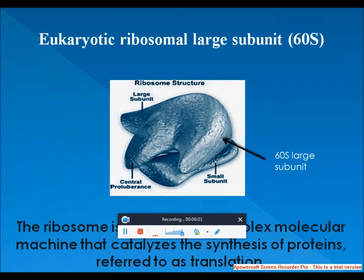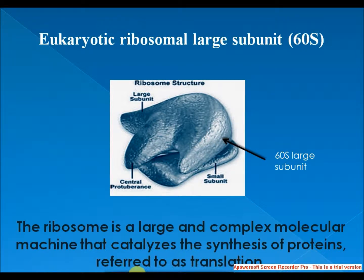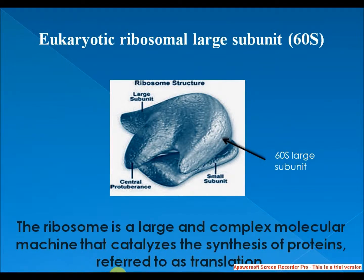Welcome to the Knowledge Club Online. I'm going to discuss the eukaryotic large ribosomal subunit, the 60S. Ribosomal particles are denoted according to their sedimentation coefficients in Svedberg units. The 60S subunit is the large subunit of eukaryotic 80S ribosomes.